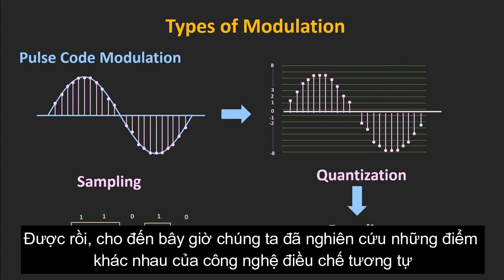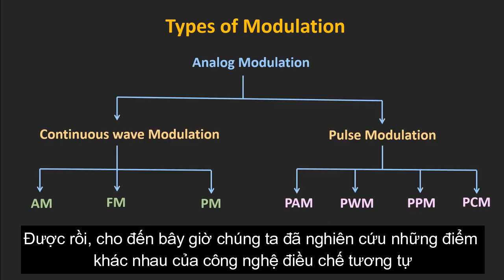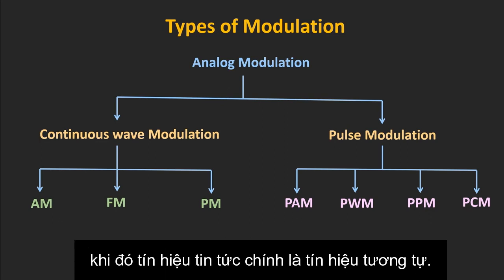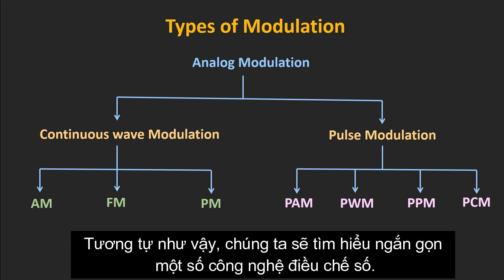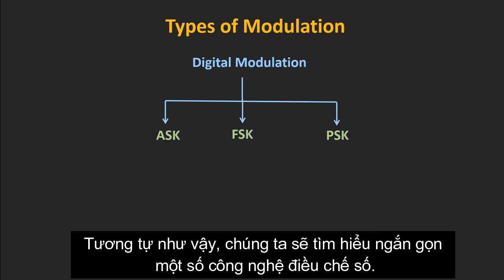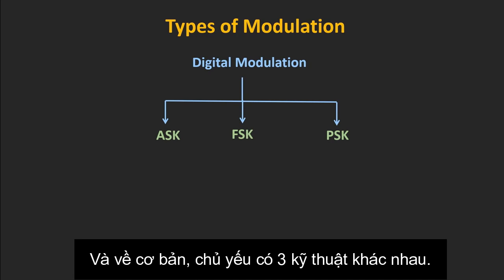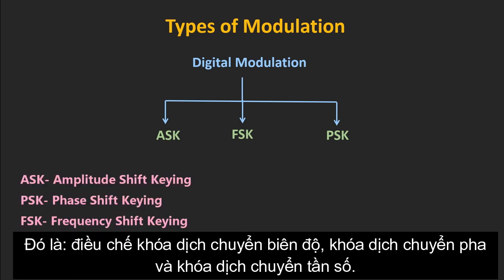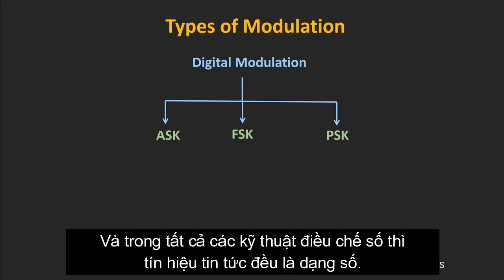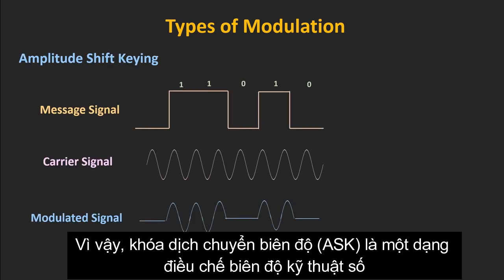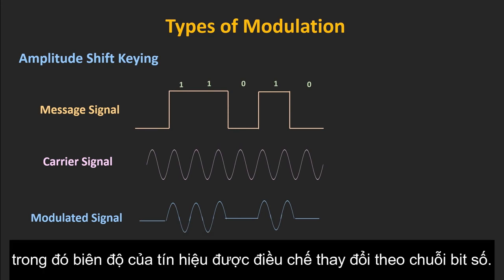So far we have seen the different types of analog modulation techniques where the message signal is analog in nature. Now let's briefly talk about some digital modulation techniques. In a broad sense, there are mainly three: amplitude shift keying, phase shift keying, and frequency shift keying. In all these digital modulation schemes, the message signal is in digital form. Amplitude shift keying is a form of digital amplitude modulation where the amplitude of the modulated signal changes according to the digital bit stream.